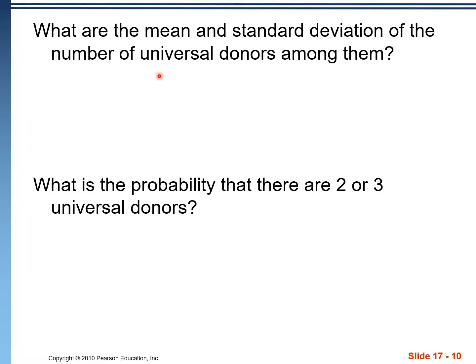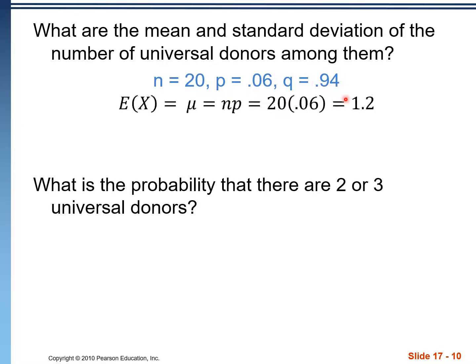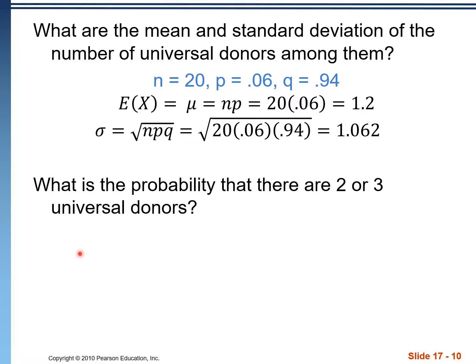We have n = 20, P = 0.06, Q = 0.94. The mean for a binomial problem is N times P: 20 × 0.06 = 1.2 universal donors expected. The standard deviation is the radical of NPQ, which gives us a standard deviation of 1.062.